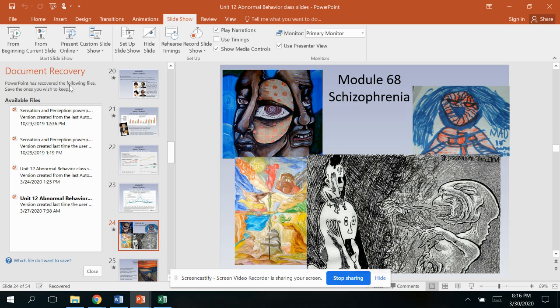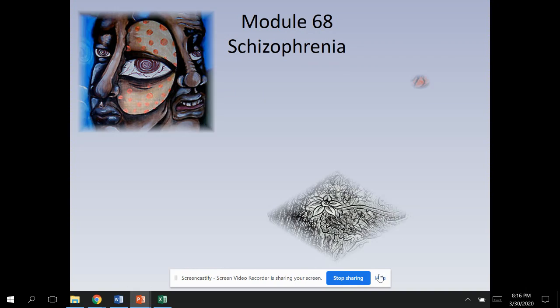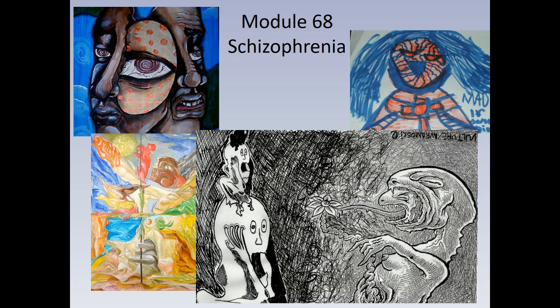Hello, everybody. Today's lesson on schizophrenia is actually going to come in two parts. What you see now are some pieces of artwork done by patients with schizophrenia. Typically, if we were in the classroom together, I would ask you what you see — what are some commonalities in these paintings? What are some shared characteristics?